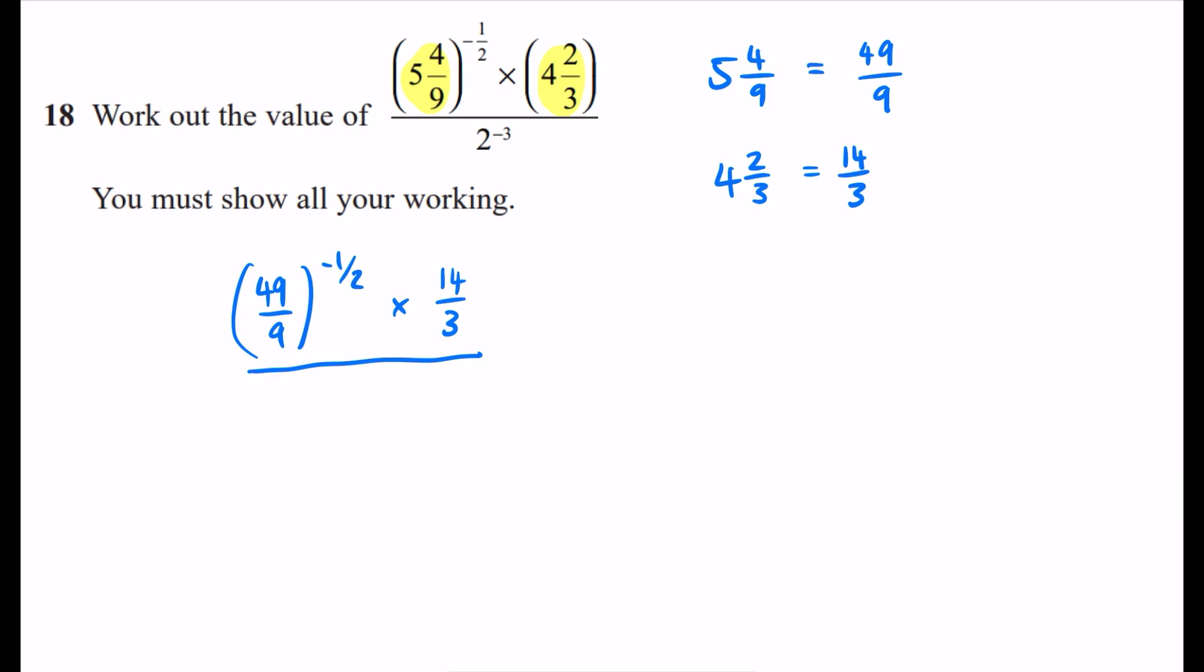Well, if you remember 2 to the power of minus 3, we write 2 to the power of minus 3 as 1 over 2 to the power of 3. And 2 to the power of 3 is 2 times 2 times 2. 2 times 2 times 2 is 8. So we have it being divided by 8 here. Let's just move this so I've got some more space.